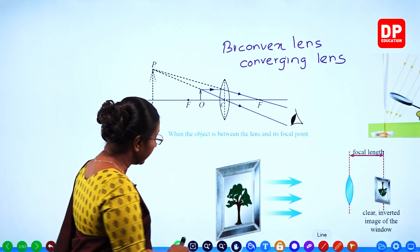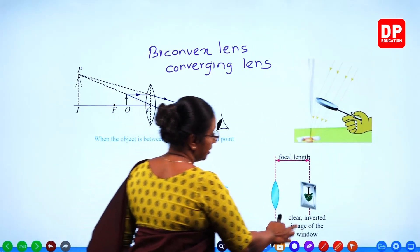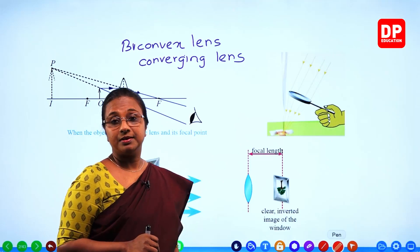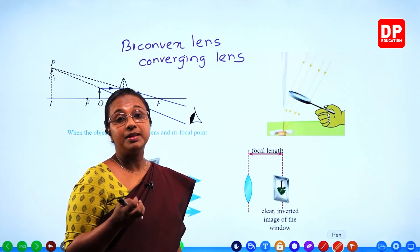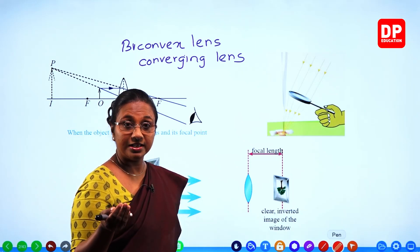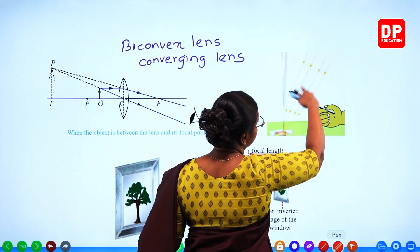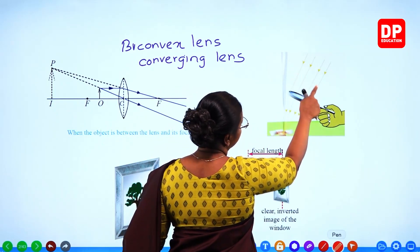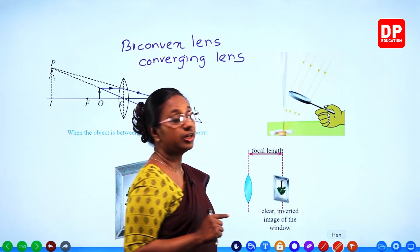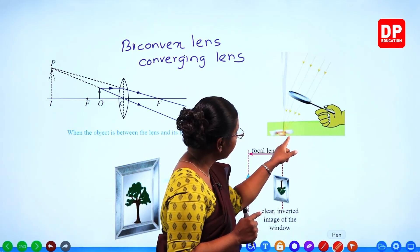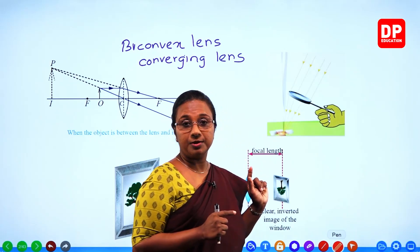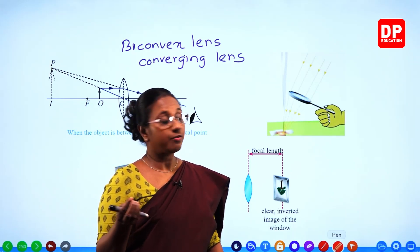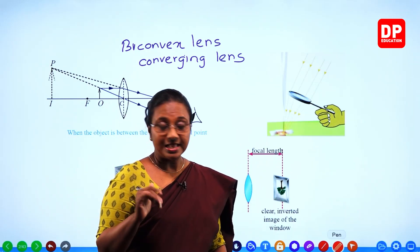That is how we use a hand lens to read small letters. The object has to be between the optical center and the focal point to get an enlarged upright image. In the second instance, when you use a hand lens to burn a piece of paper or cotton wool, the rays from sunlight are parallel rays, and they converge onto the focal point. The object to be burned should be placed at the focal point where all the rays converge.